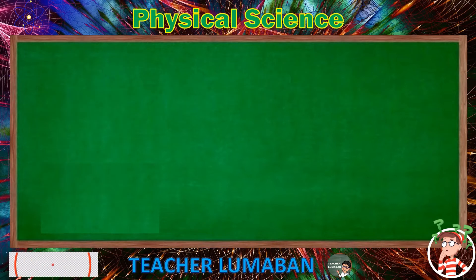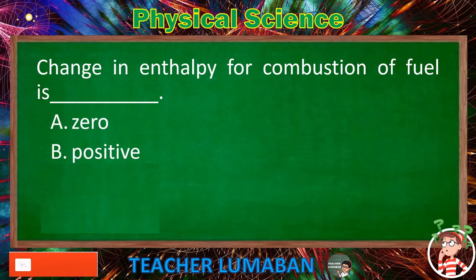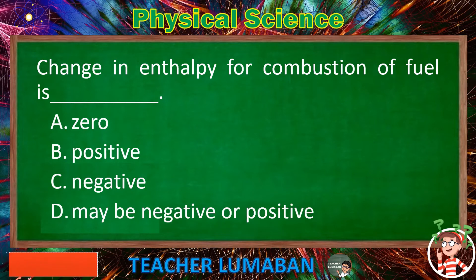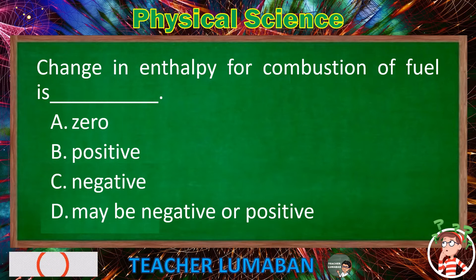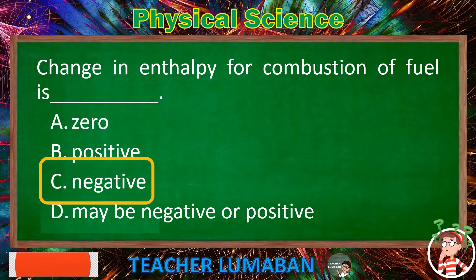Change in enthalpy for combustion of fuel is blank. Letter A: zero. Letter B: positive. Letter C: negative. Letter D: may be negative or positive. The correct answer is Letter C, negative. The change in enthalpy for combustion of fuel is negative.